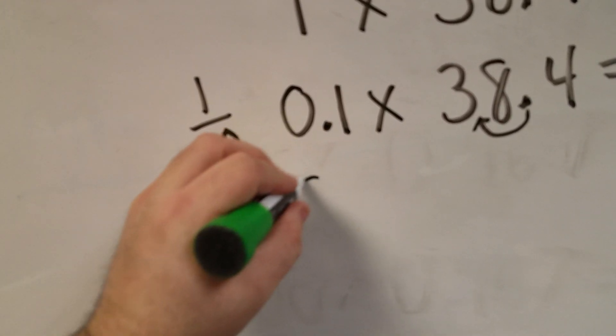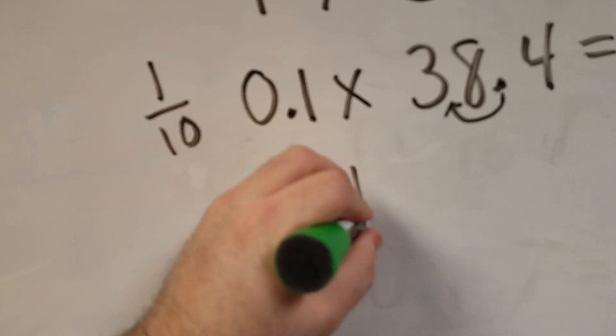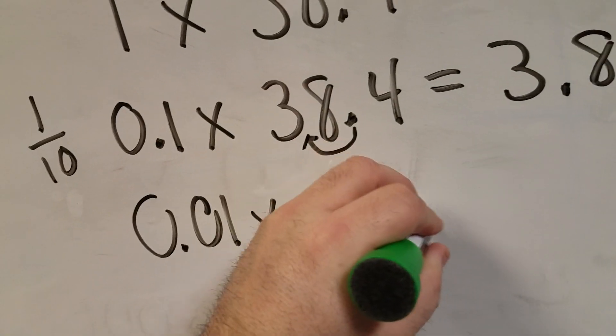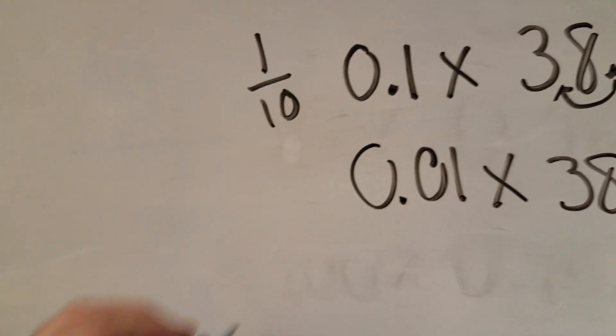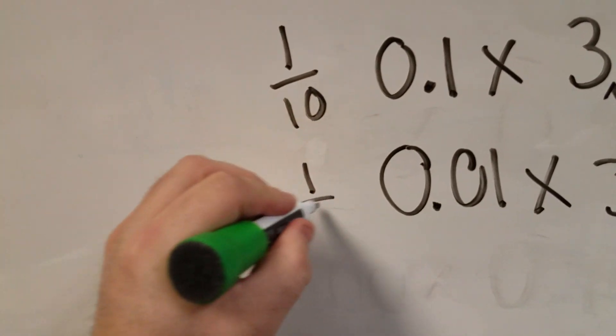What about a hundredth? 0.01 times 38.4. This is one-hundredth. 1 over 100.